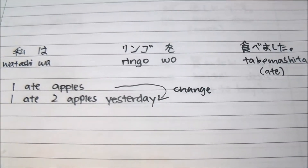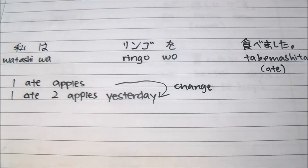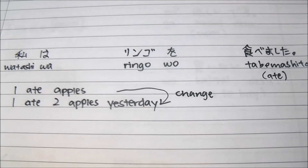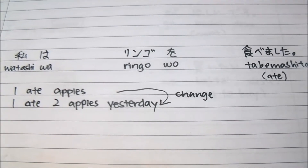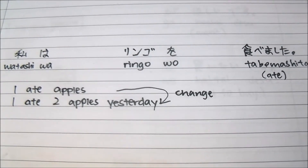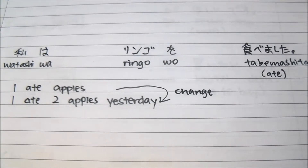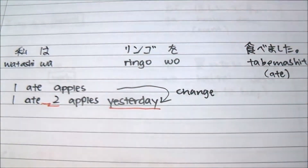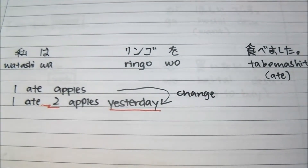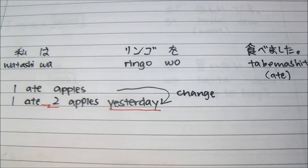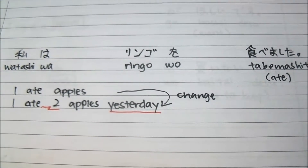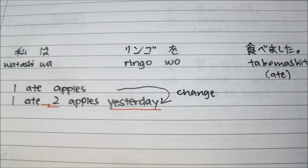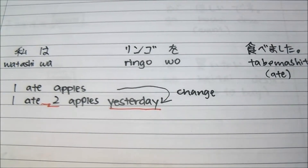So now we want to try to challenge something. You can see this means 'I ate apples.' But how about we change it to 'I ate two apples yesterday'? So we have to add 'two' and we have to add 'yesterday'. How do we go about adding two apples? Do we say 'two ringo wo tabemashita'? And for yesterday, do we put it at the back like English?